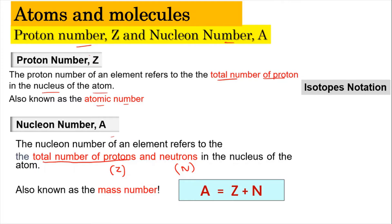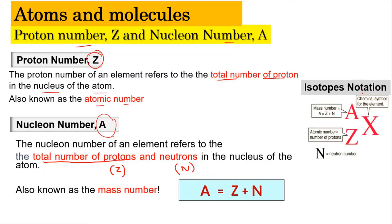Since you understand proton number Z and nuclear number, you can now write the isotope notation in terms of A, Z, and X, where A is the nuclear number, Z is the proton number, and X is the chemical symbol. For example, magnesium has 12 protons and a nuclear number (mass number) of 24.